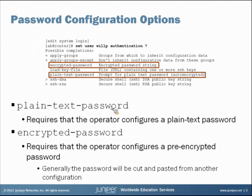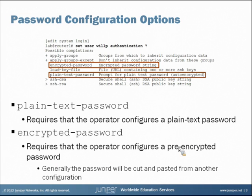The plain text password requires the operator who's configuring at this moment to configure the plain text password that the user would enter when he logs into the box. So the operator typing all this configuration needs to know the actual password for the user. If we use the encrypted password method, it requires the operator to use a pre-encrypted password at the end of this line. So if I say authentication encrypted password, I would be expected to enter a pre-encrypted form of will_p's password.